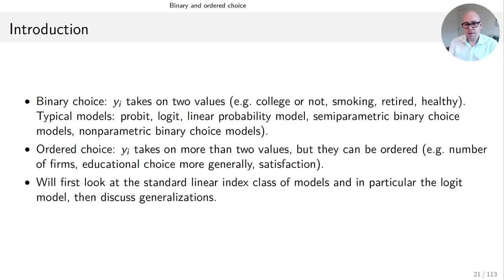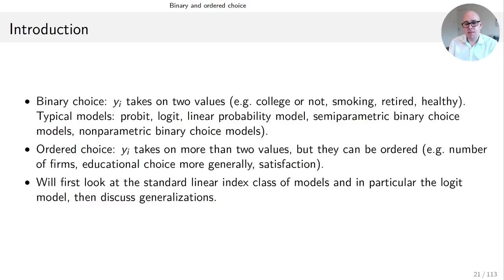Other models include the linear probability model, semi-parametric binary choice models, and non-parametric binary choice models — we're going to see many of those in later videos. A direct extension to binary choice is ordered choice, where y_i takes on more than two values but they can be ordered and everybody would agree on a particular ordering. Examples include the number of firms on a market, educational choice more generally, or satisfaction with life.